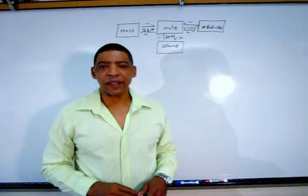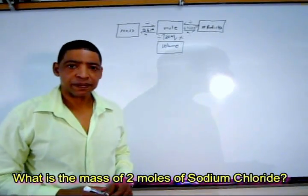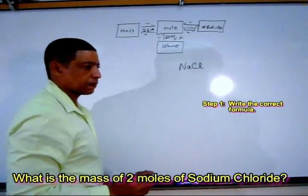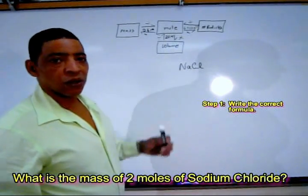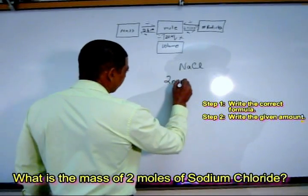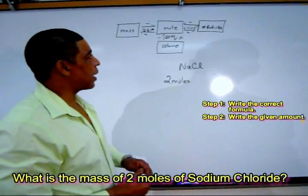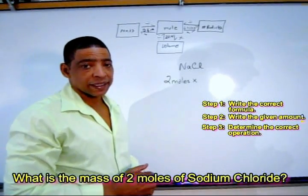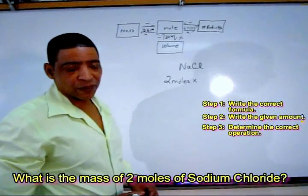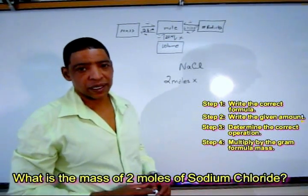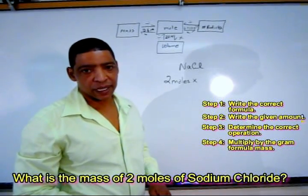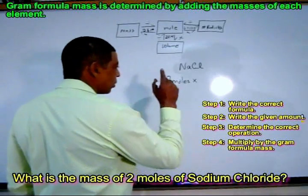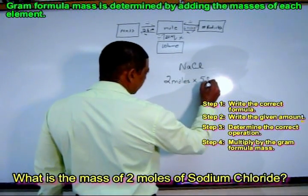Suppose we're asked to find the mass of two moles of sodium chloride. The formula for sodium chloride is NaCl. According to the mole map, if we're given moles — which in this case is two moles — and we wish to find mass, the operation is multiplication. We multiply by the gram formula mass of sodium chloride, where sodium has a rounded average mass of 23 and chlorine has a rounded average mass of 35. So the gram formula mass of sodium chloride will be 58 grams per mole.